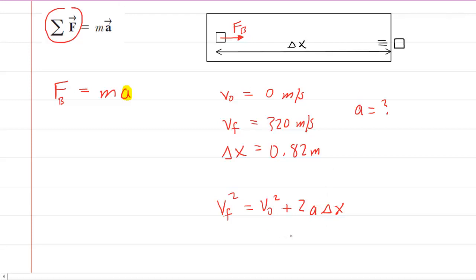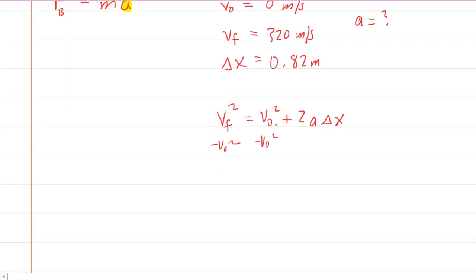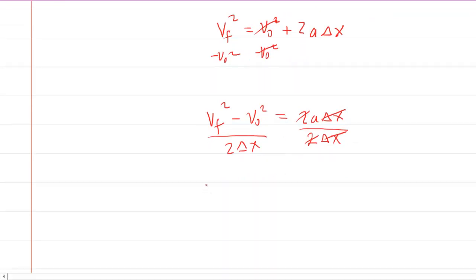It might be convenient to solve this equation for the acceleration and to do that you would subtract the initial velocity squared on both sides of the equation which cancels it out on the right side. So now we have the final velocity squared minus the initial velocity squared is equal to 2a delta x. And then finally to solve for the acceleration we will divide both sides by 2 delta x. Like so. So the 2s cancel, the delta xs cancel, and we're left with an expression for the acceleration.